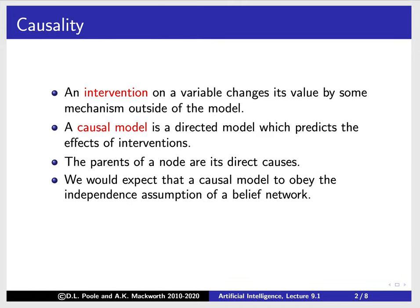We expect the causal model to obey the independence assumption of a belief network. If we knew everything that came before — specifically the direct causes — then nothing else that comes before is relevant. The only way to affect the variable we're interested in is to affect one of its direct causes. If we knew the direct causes, everything else is irrelevant. That's exactly the assumption we made in a belief network.